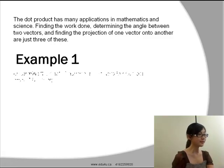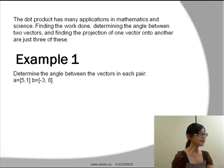Let's go straight into example 1. Determine the angle between the vectors in each pair: vector a of [5, 1] and vector b of [-3, 8].